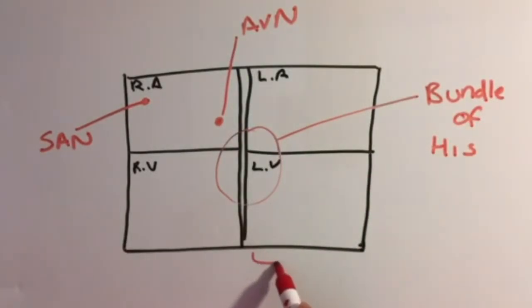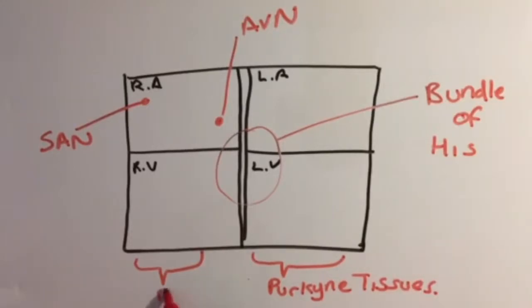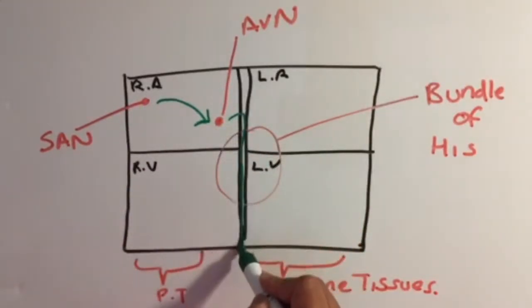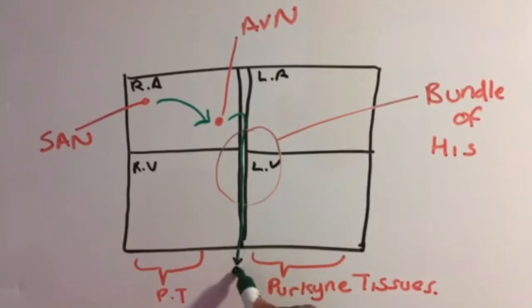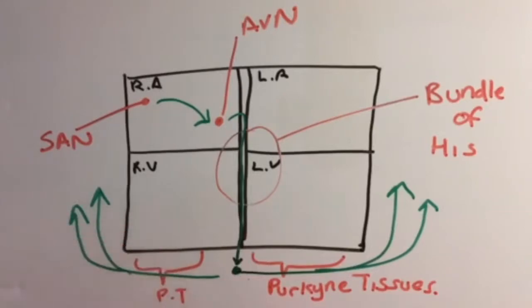Electrical waves cannot directly pass into the right ventricle as there is a non-conducting collagen tissue between them. So instead, the waves of electrical activity are sent to the AVN. After it reaches the AVN, it sends the electrical activity to the Bundle of His. Here there is a slight delay, and this is to make sure that the atria have emptied before the ventricles contract.